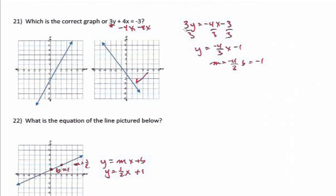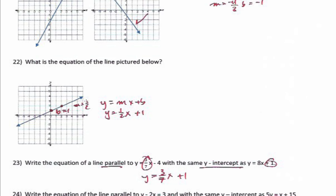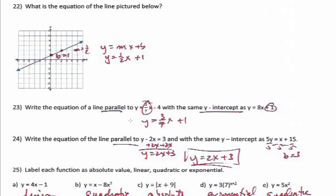To identify the correct graph, subtract 4x from both sides: 3y equals negative 4x minus 3. Dividing by 3: y equals negative four-thirds x minus 1. Slope is negative four-thirds and y-intercept is negative 1, so it's definitely the second graph — passes through negative 1, then down 4 over 3. For the line pictured below, the y-intercept is 1 and slope is up 1 over 2, so the equation is y equals one-half x plus 1.